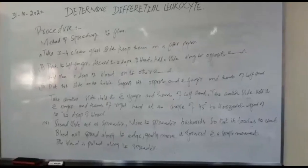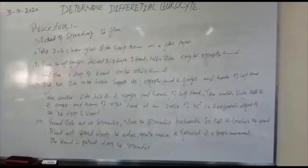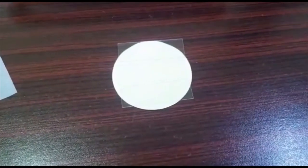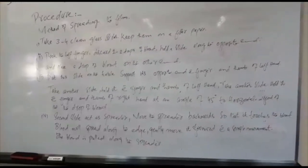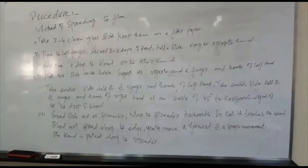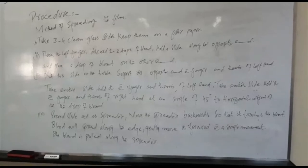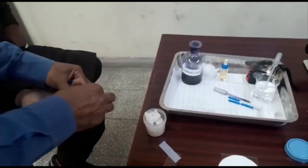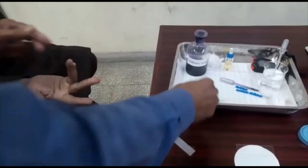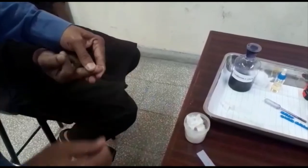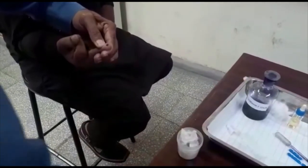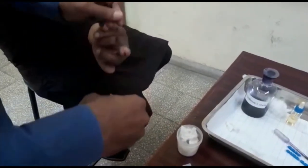Method of spreading the film: take 3–4 clean glass slides and keep them on a filter paper. Prick the finger, discard the first one to two drops of blood, hold a slide at one end and place a drop of blood on the other end.